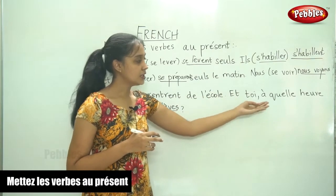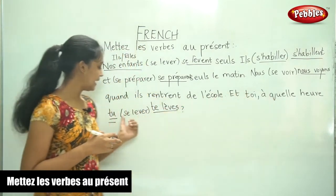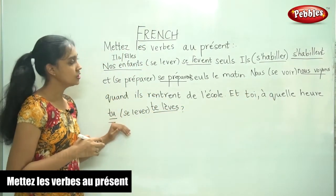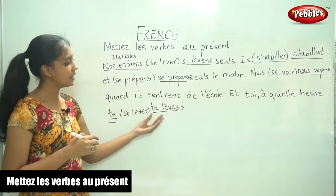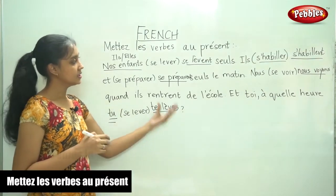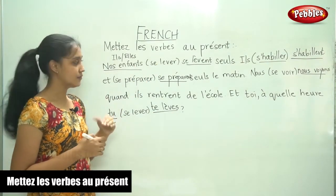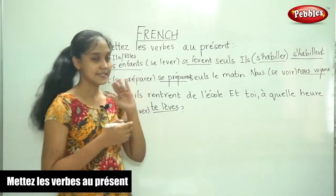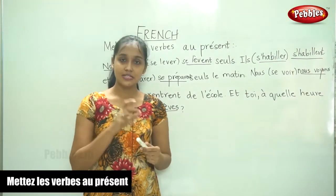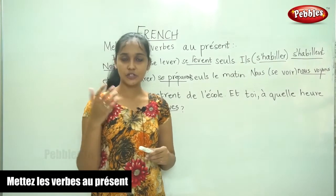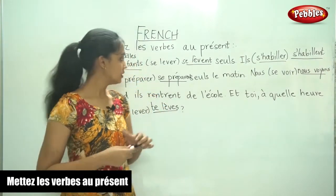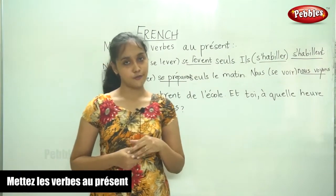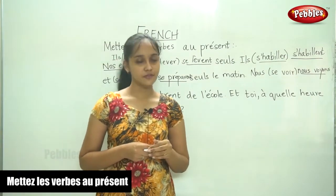So, now you know how to write the verbs with the reflexive. You have to see the subject. Based on the subject, you have to write the reflexive pronoun followed by the conjugated form of the verb.